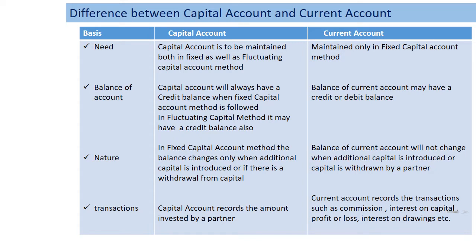In the case of fixed capital, the capital account balance generally remains unchanged from year to year because adjustments like interest on capital, interest on drawings, salary, etc., are done in the current account. Only when there is an additional capital contribution or a withdrawal from capital will the balance change in the capital account. In the case of the current account, it will go on changing because these adjustments are done in the current account itself.